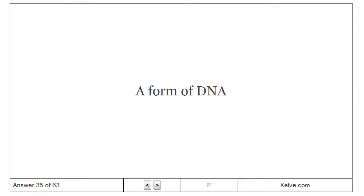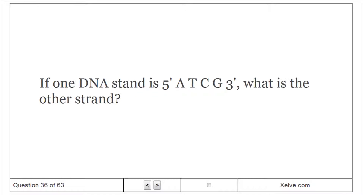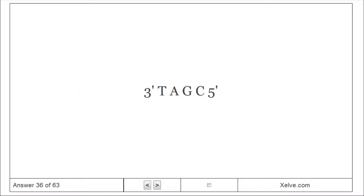A-form DNA exists. If one DNA strand runs 5' to 3', what is the other strand? It runs 3' to 5' — the complementary antiparallel strand is 3' TAGC 5'.